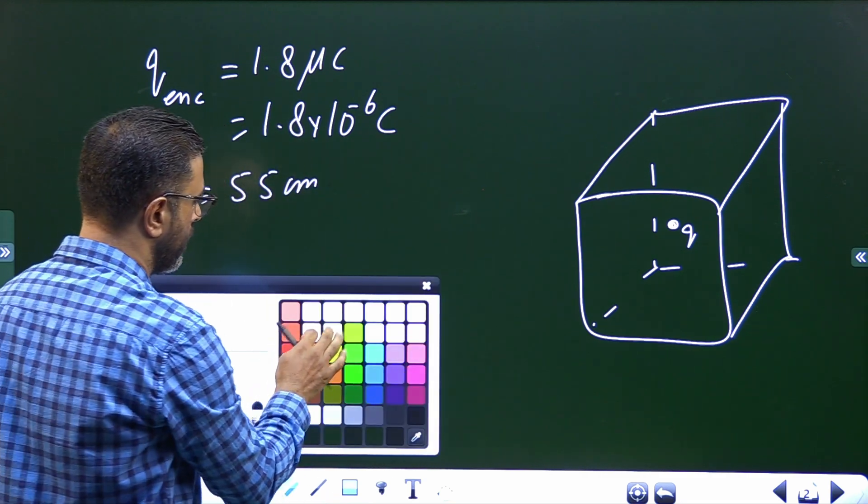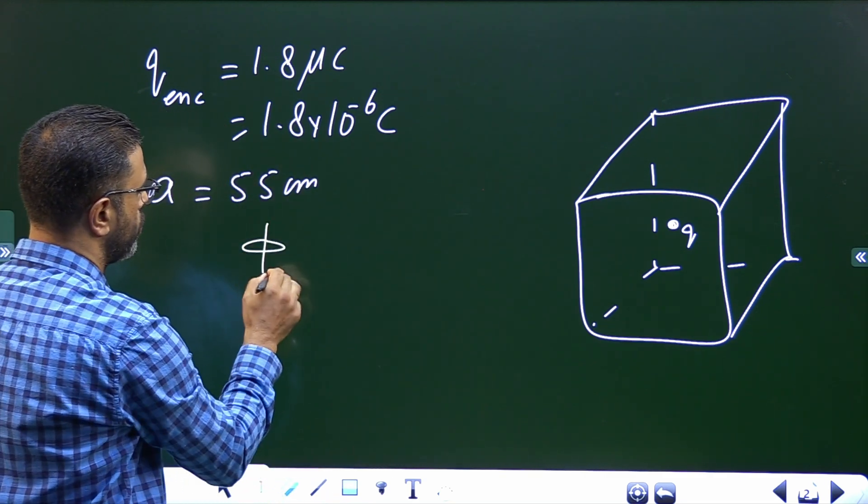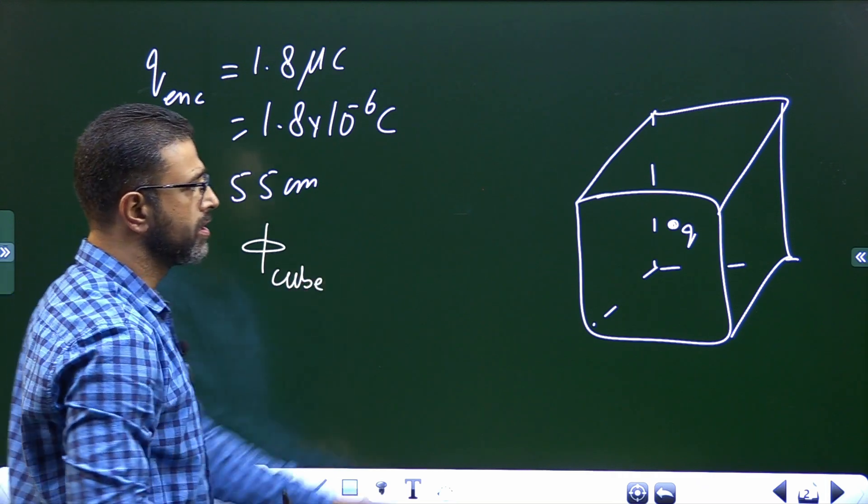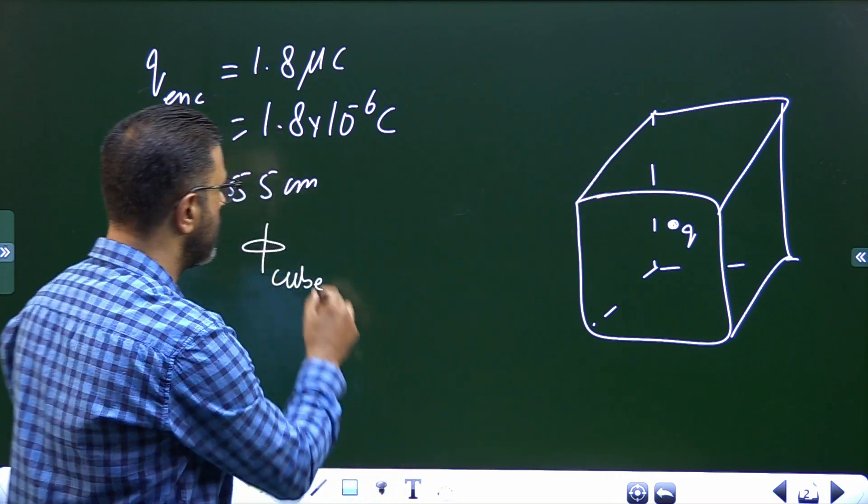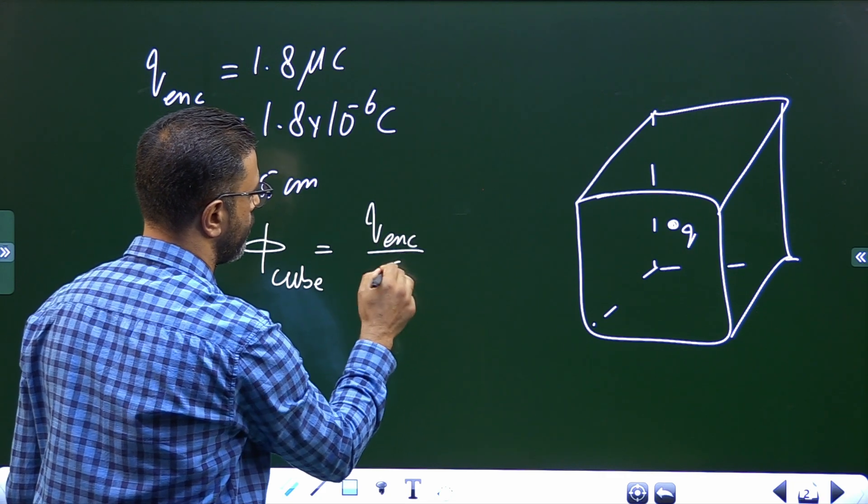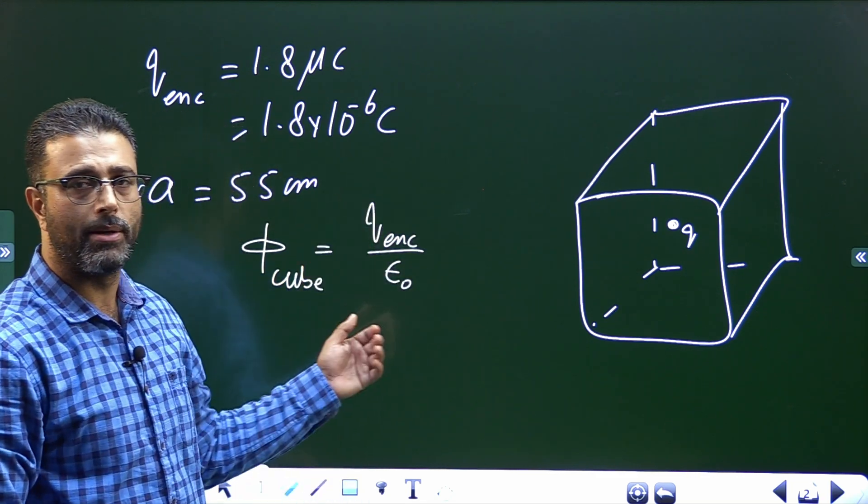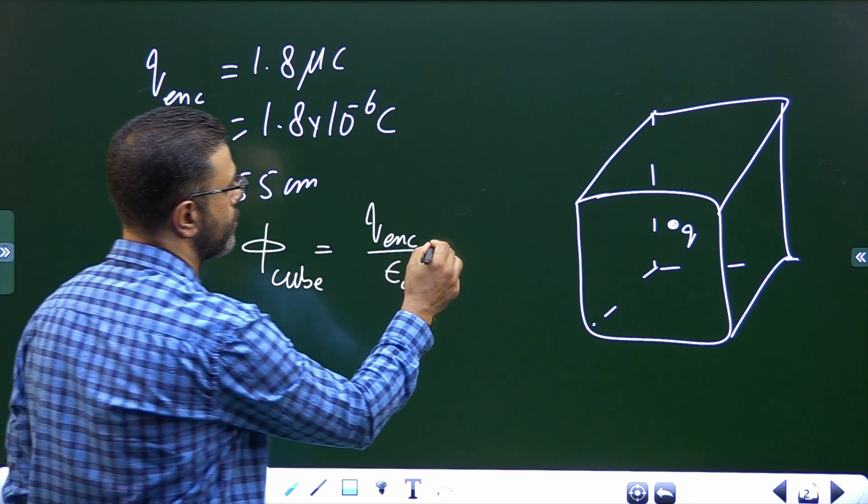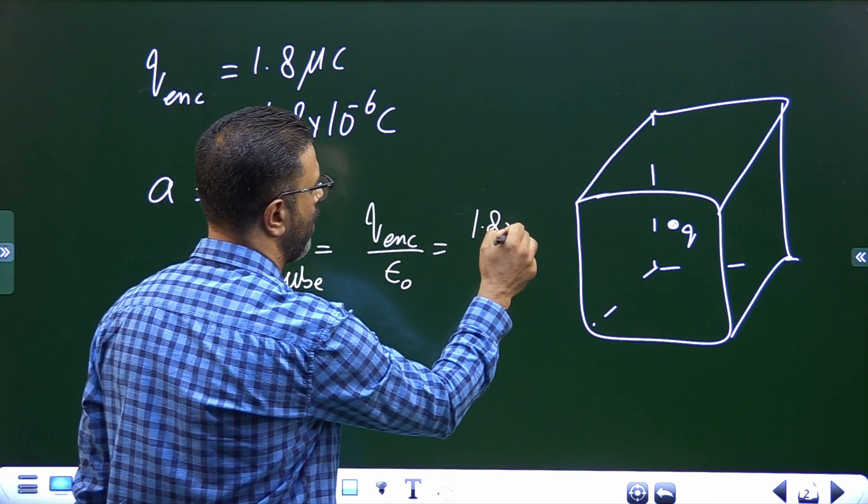Flux through the cube, flux through the closed surface, this cube is a closed surface, is Q enclosed divided by epsilon 0. So that's it, Q enclosed divided by epsilon 0.